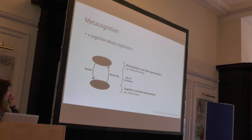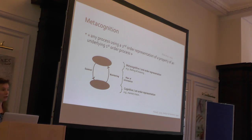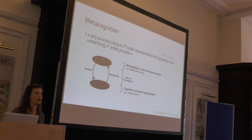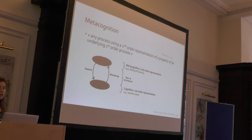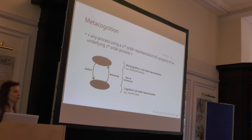I will be referring to this as metacognition. Metacognition traditionally is defined as cognition about cognition, but that's a really broad definition. It's actually useful to refine it and talk about metacognition as encompassing any process using a metacognitive representation - a representation that contains information about another cognitive representation. For instance, if you have a memory trace, a metacognitive representation would be how reliable your memory trace is.